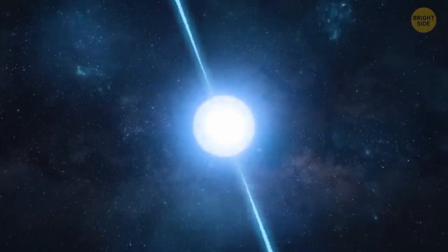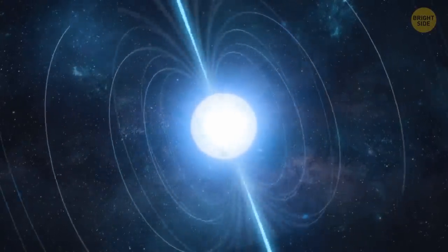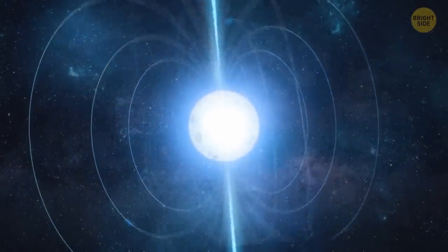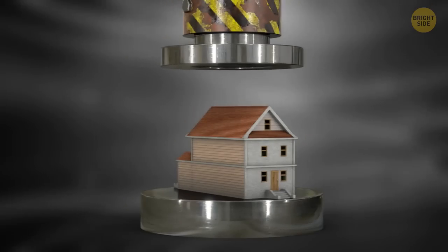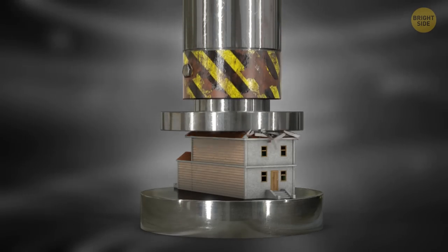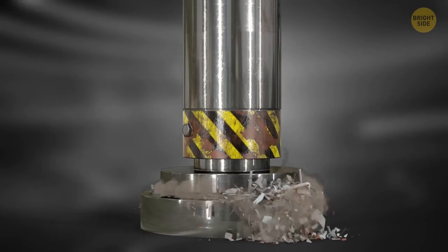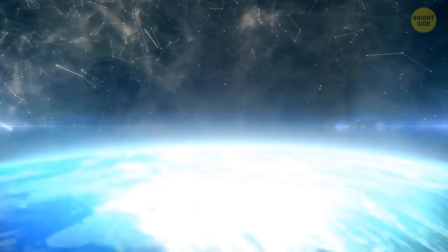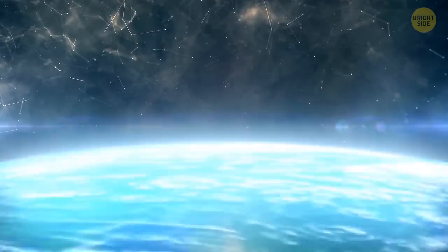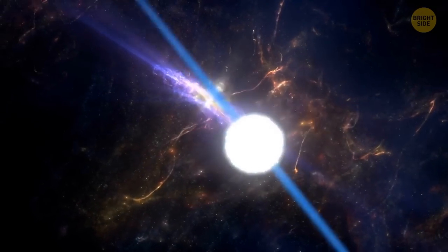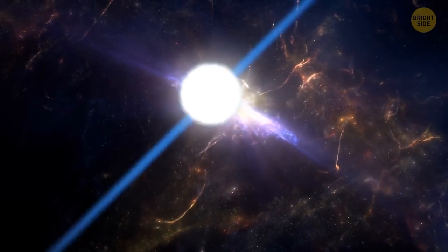Neutron stars also have incredibly strong magnetic fields. That's why, if there was life on a neutron star, it would be two-dimensional. The star's gravity is so powerful, it'd literally flatten anything on its surface. And if such a star had an atmosphere, it wouldn't spread up further than a foot or so above the surface.